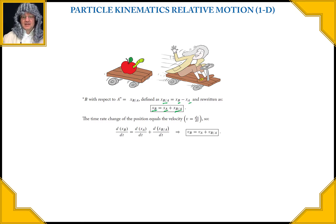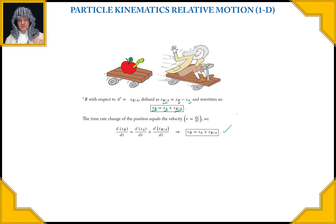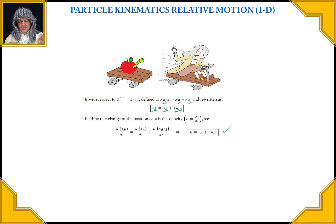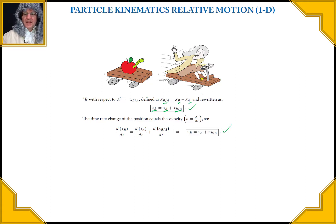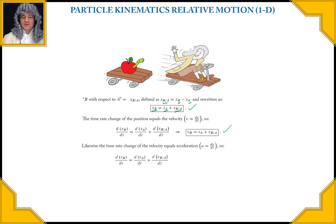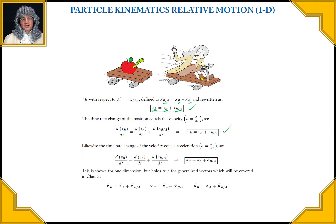If we take the time rate of change of that position relationship, we get the velocity relationship. We could think of this just like wagons — the relative velocity of one with respect to the other. We can write the velocity of B if we know the velocity of A and the relative velocity of B with respect to A. Taking the time derivative again gives the acceleration. This applies to rectilinear motion, but we can also generalize it to vectors. It's seemingly simple but really powerful and useful.